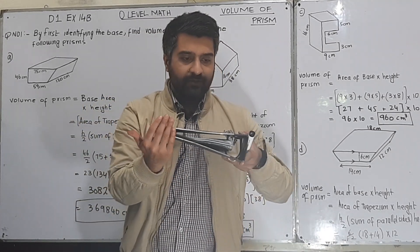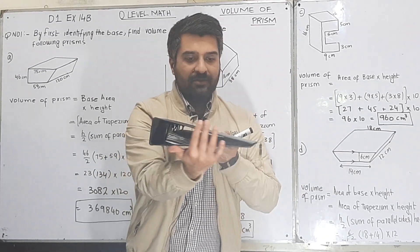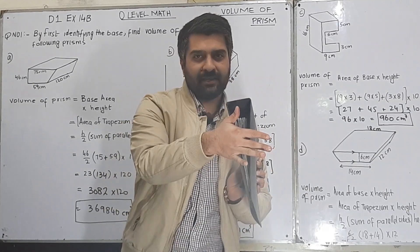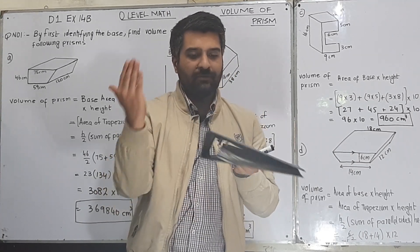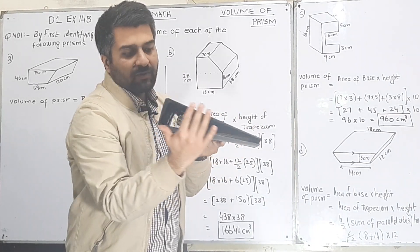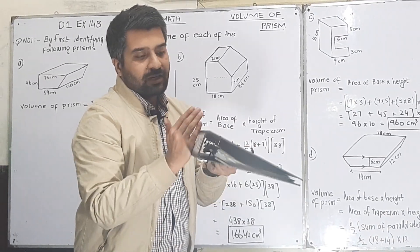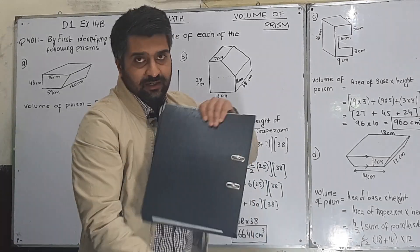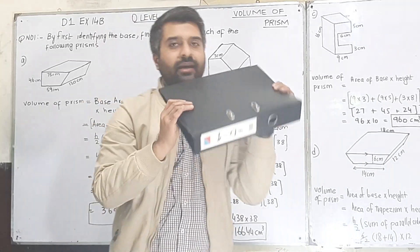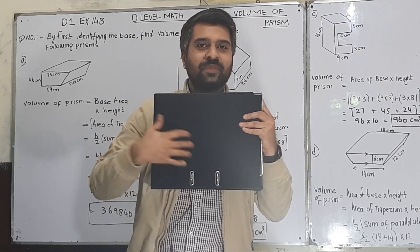If you observe, this base is a triangle, and at the other end it is also a triangle. So we have identical ends — this end and that end are exactly the same. If you take a cross section by cutting it from anywhere, the cross section will be exactly the same. The faces are flat, the bases are identical polygons, and the distance between the two bases is the height of the prism.